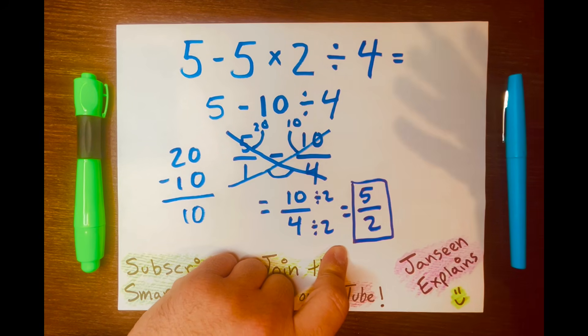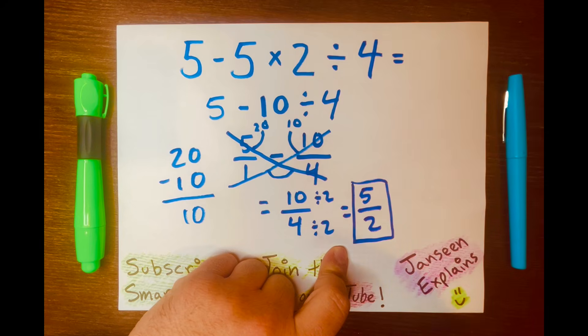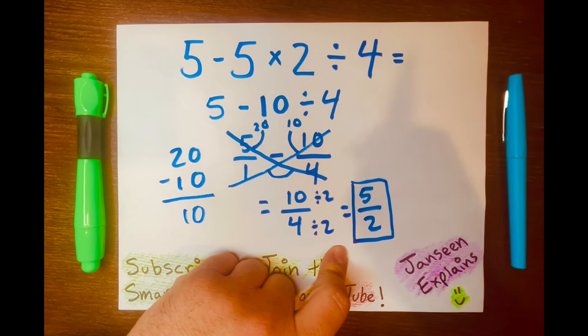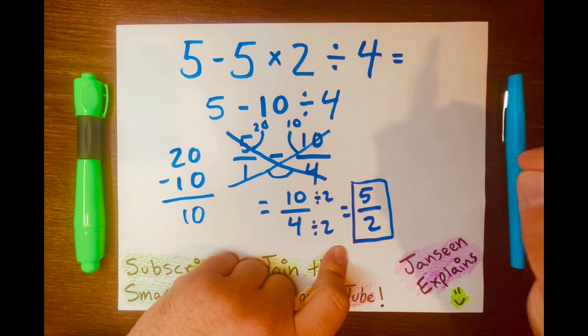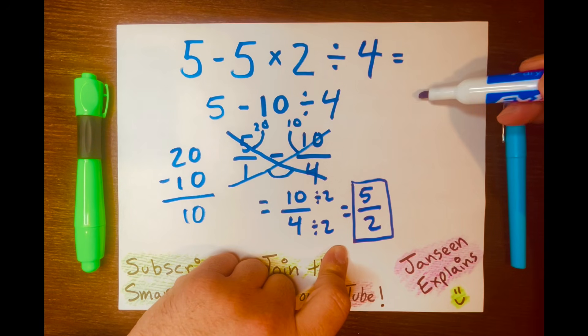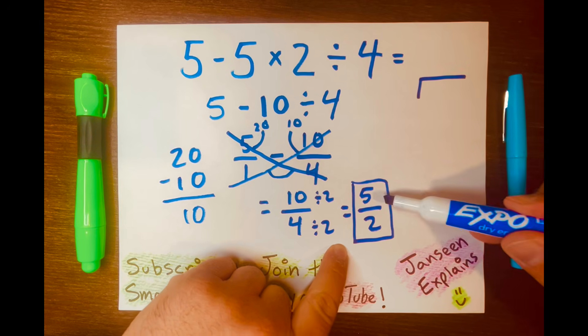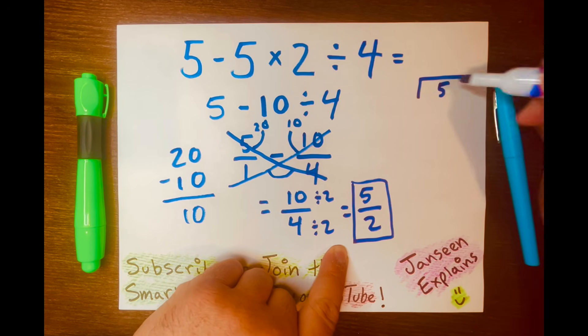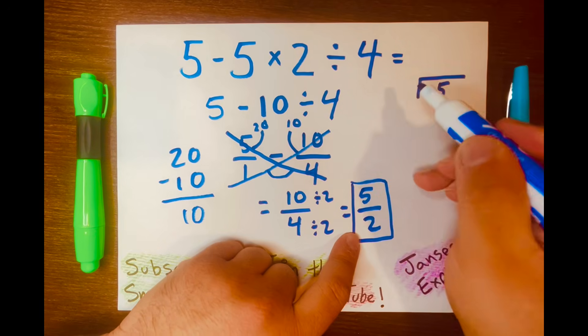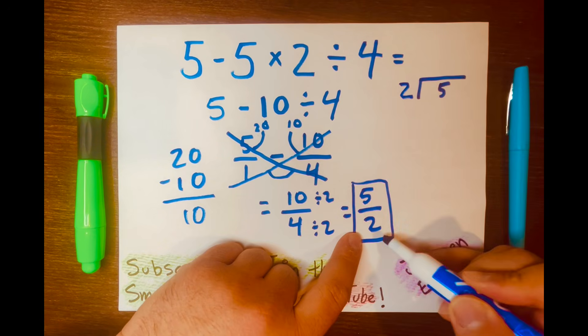Let's go ahead and get a mixed number answer and a decimal answer using long division. So this is the long division symbol. And the 5 goes inside. That is the dividend. And the 2 goes outside. That is called the divisor.